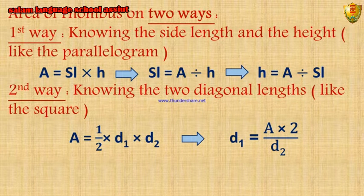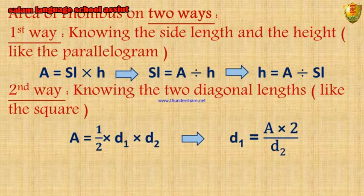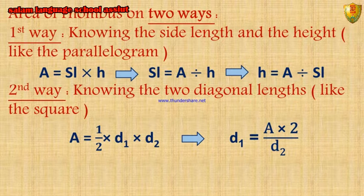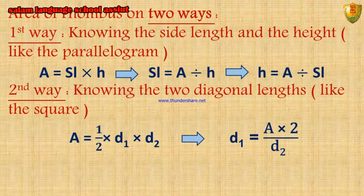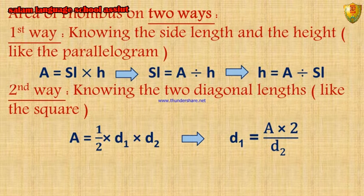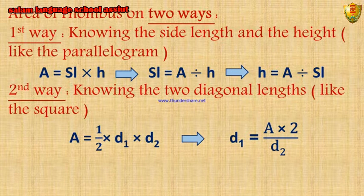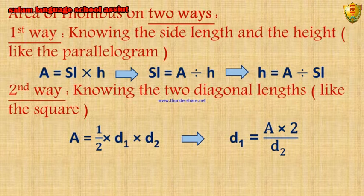The first way to find the area of the rhombus is by knowing the side length and the height, like the parallelogram. Area of the rhombus equals side length times height. We can get the side length by dividing the area by the height, and we can get the height by dividing the area by the side length. The second way is by knowing the two diagonal lengths.